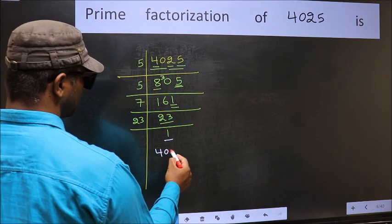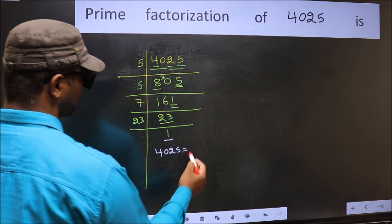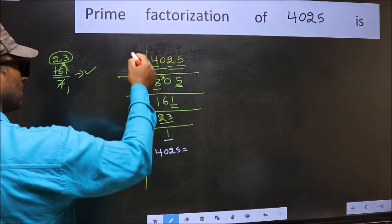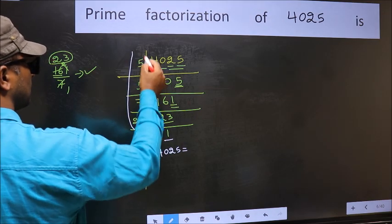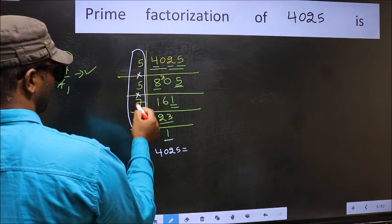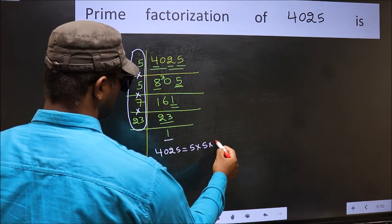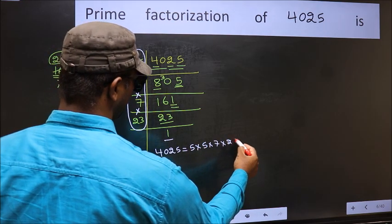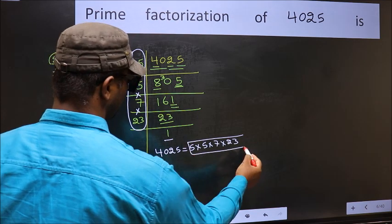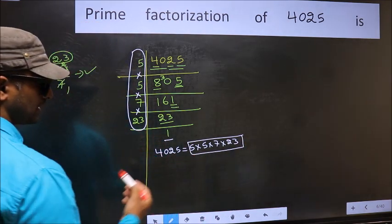So the prime factorization of 4025 is the product of these numbers: 5 × 5 × 7 × 23. This is the prime factorization of 4025.